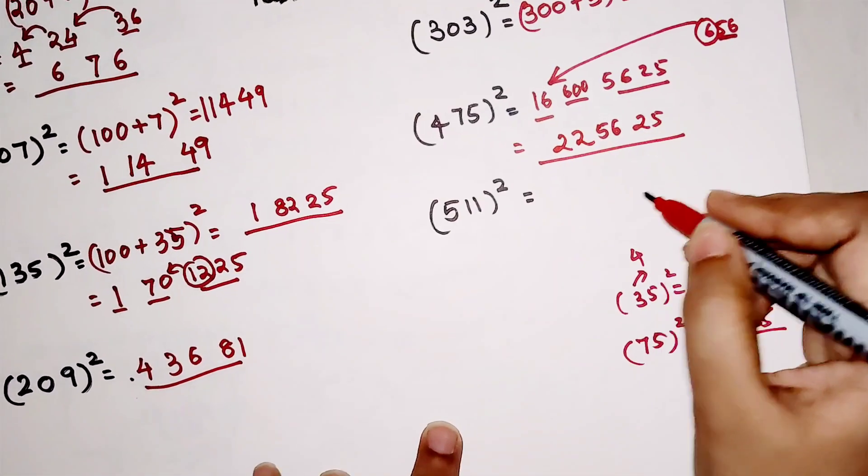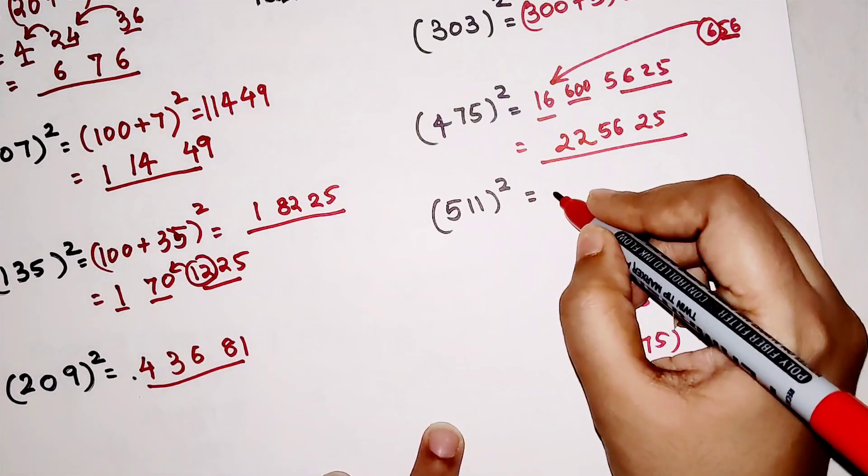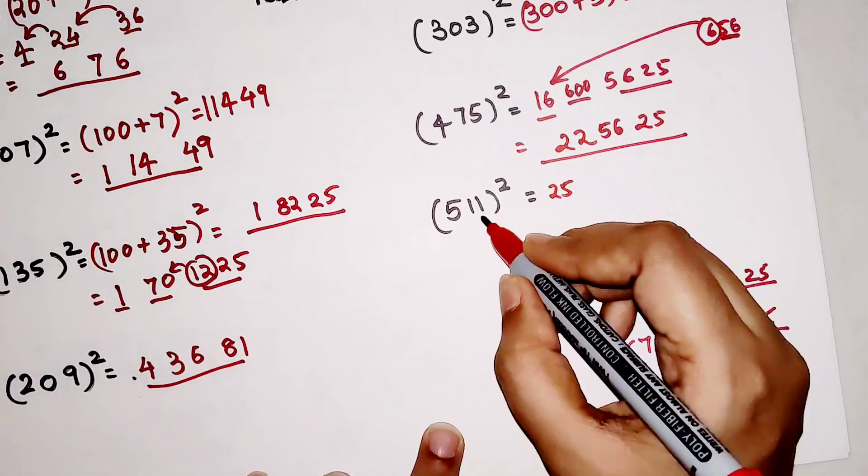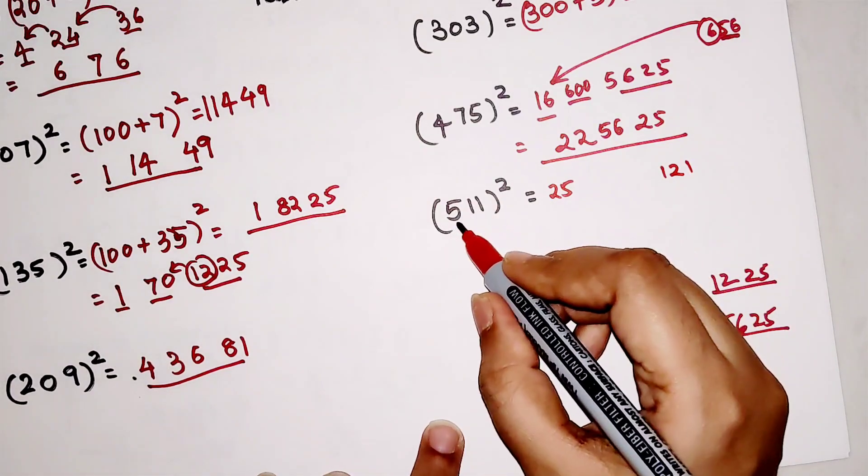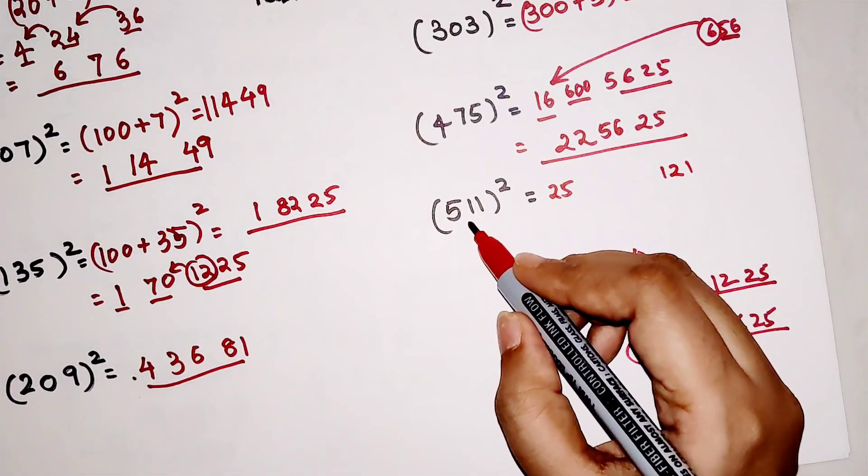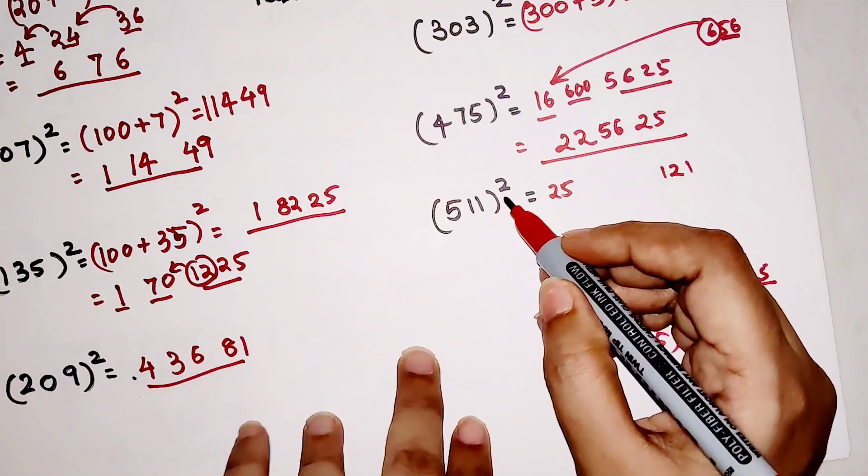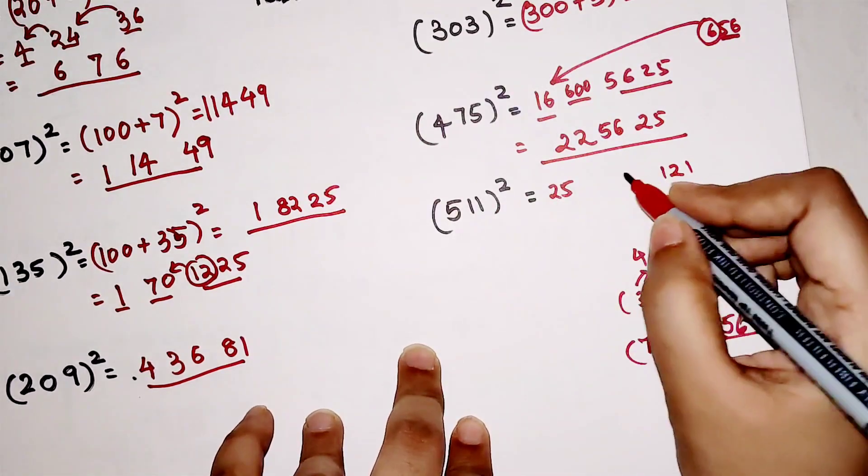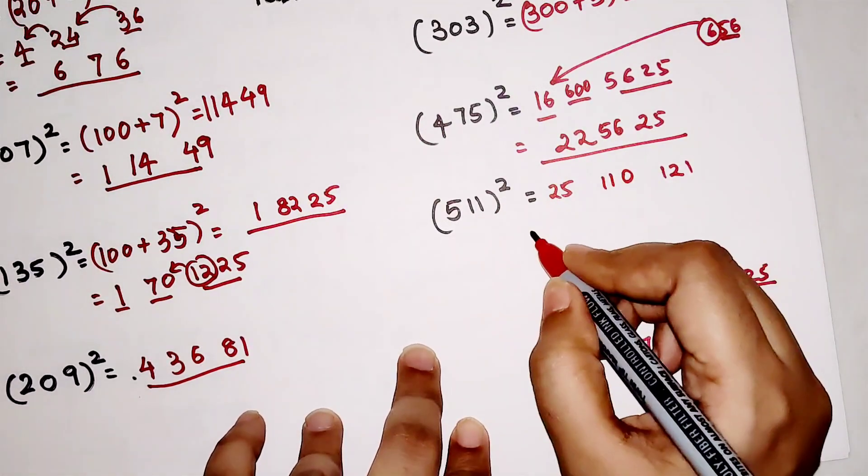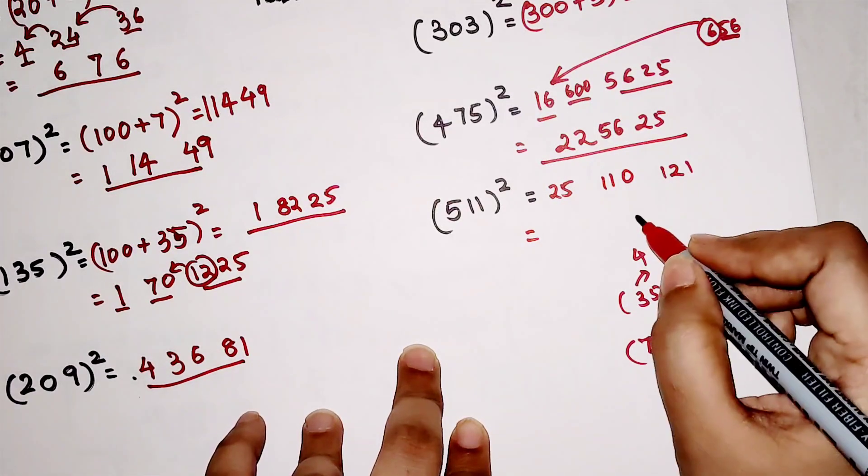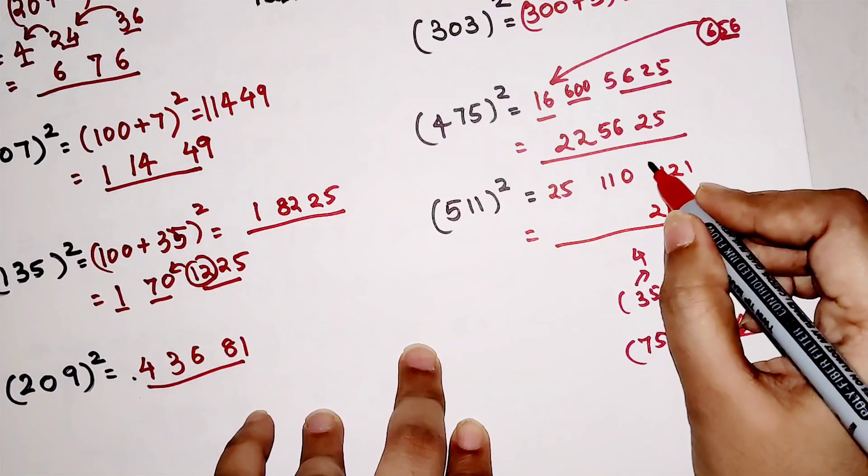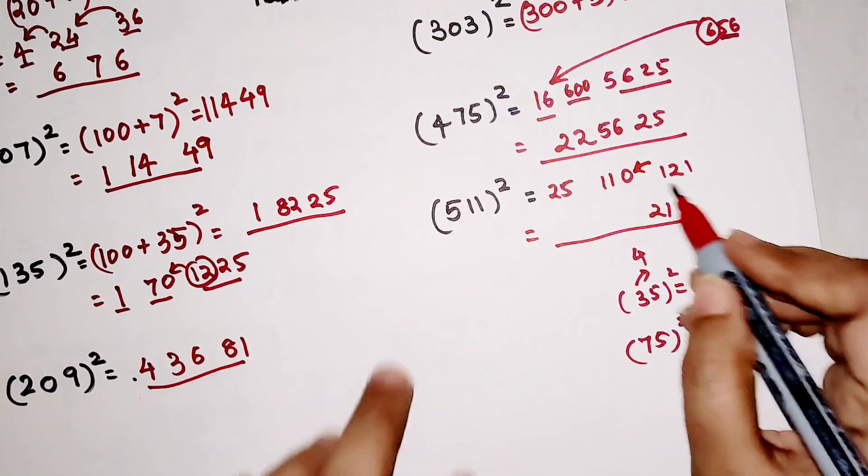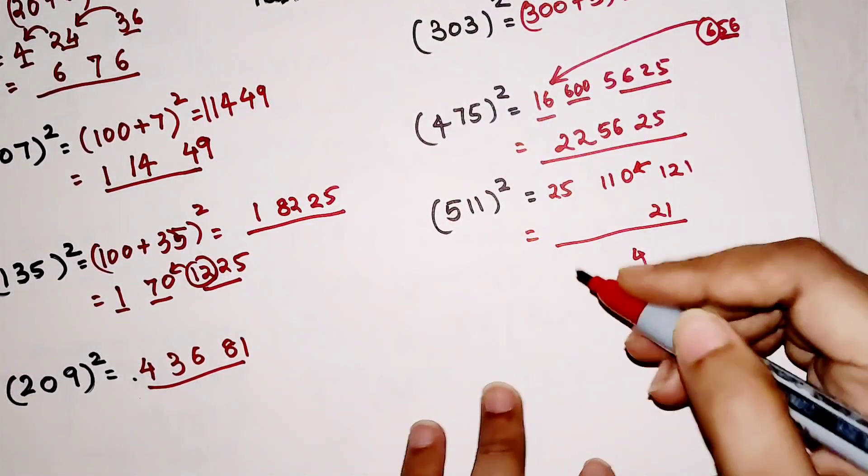Now for 511². Square of 5 is 25, square of 11 is 121, and multiplying 5 into 11 gets you 55, into 2 gets you 110. So your answer now becomes—from this one we will just take 21. This 1 gets added over here. So 110 plus 1 gets you 111.